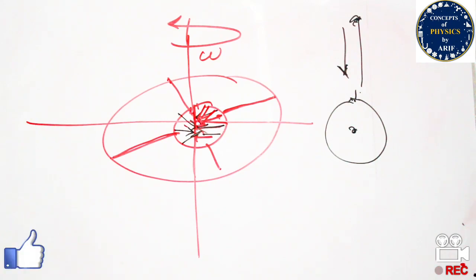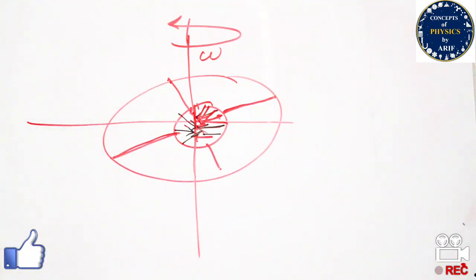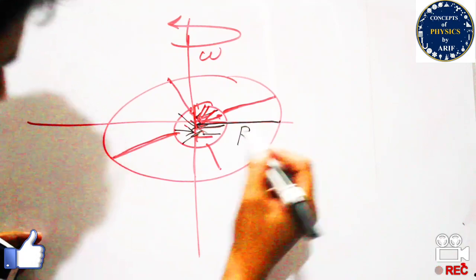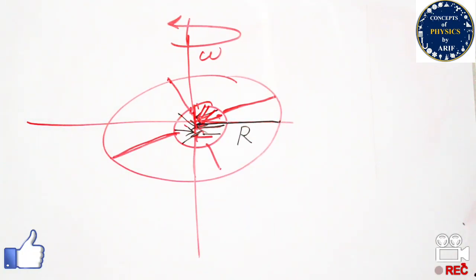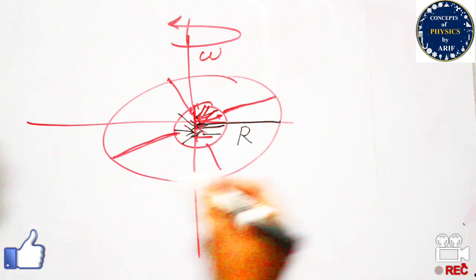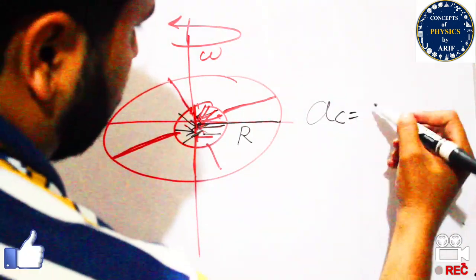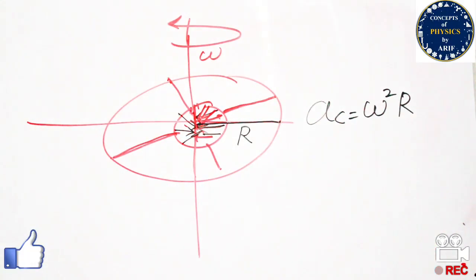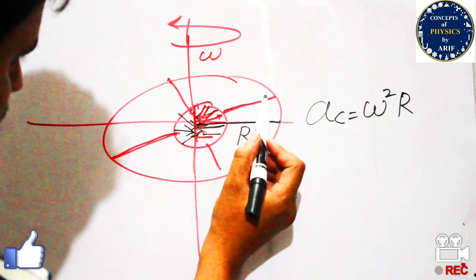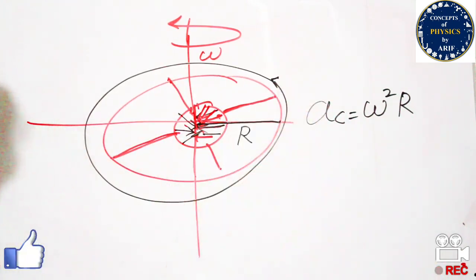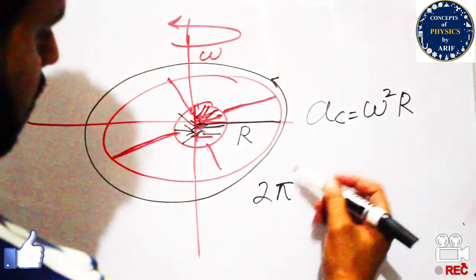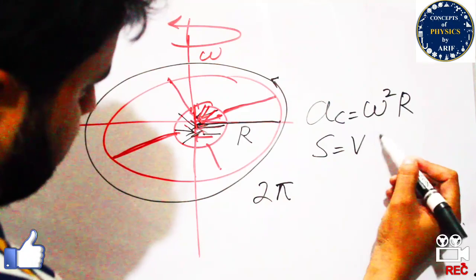We need to understand what the acceleration due to gravity will be in this setup. From the center to the outer surface, r is the radius of the artificial satellite, and acceleration is equal to omega squared times r. This omega is the angular velocity at which it is moving. For one complete rotation, it completes one cycle, and one cycle covers a distance of 2π.